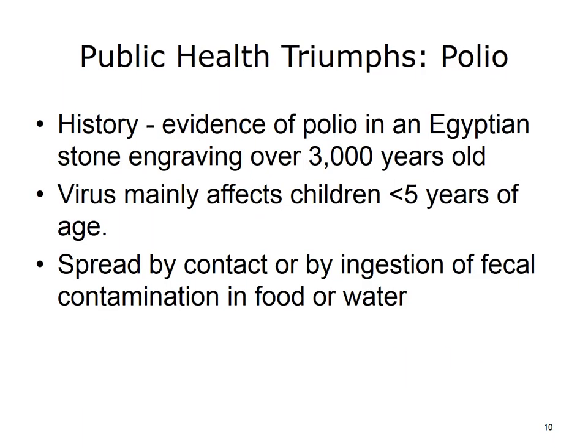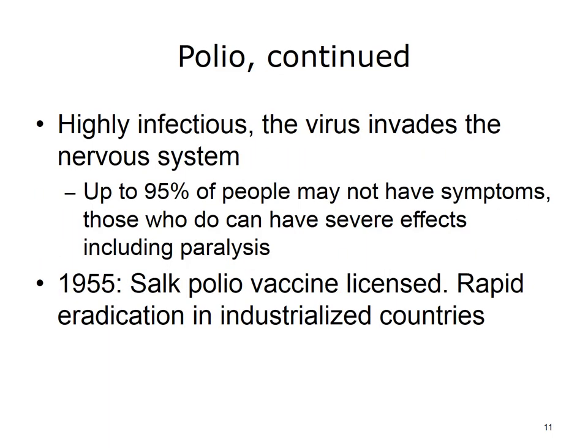Polio is another disease that has been a threat for thousands of years. There is evidence of polio in an Egyptian stone engraving more than 3,000 years old. The polio virus mainly affects children under 5 years of age and is spread by fecal contamination of food or water. The highly contagious virus invades the nervous system. The vast majority of those infected are not seriously affected, but for those who are, the symptoms are severe, including paralysis. In 1955, the Salk polio vaccine was licensed, which led to the rapid decline of polio cases in industrialized nations.